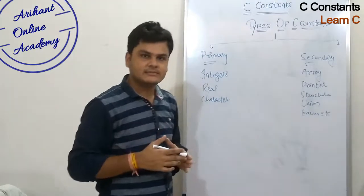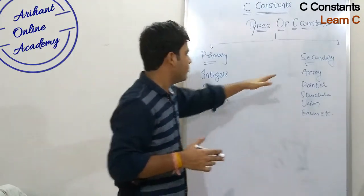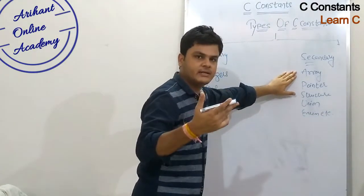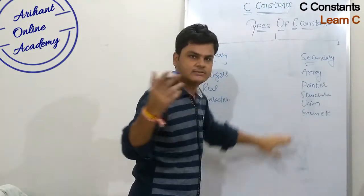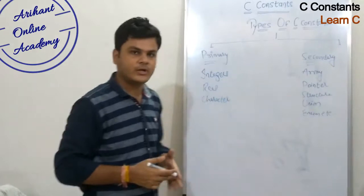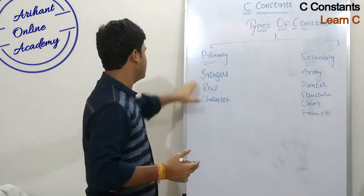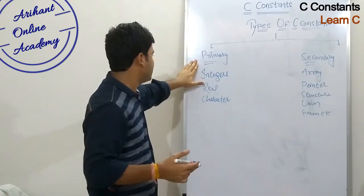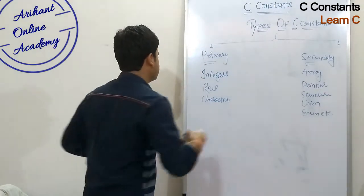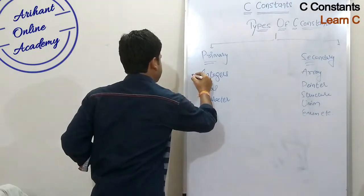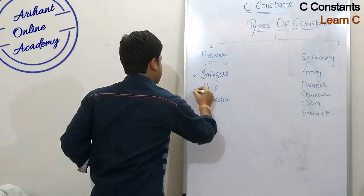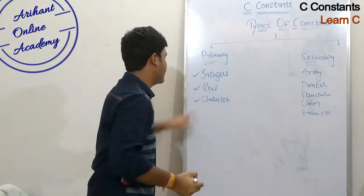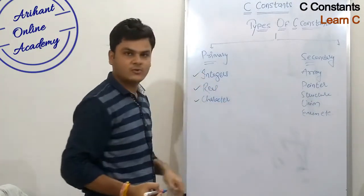We will discuss secondary constants when we cover arrays, pointers, and related topics. So let's discuss about primary constants. Primary constants are of three types: integer, real, and character constants.